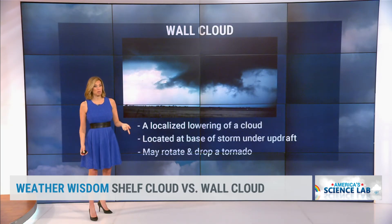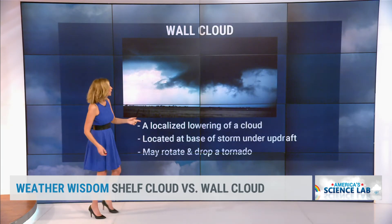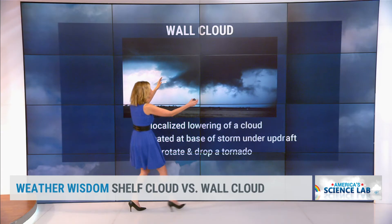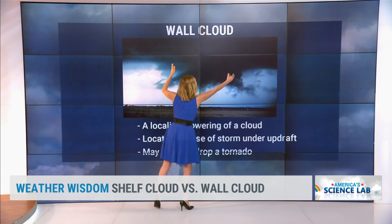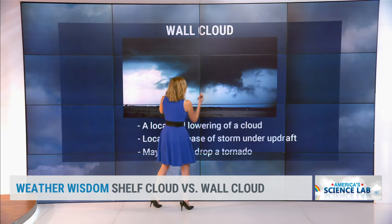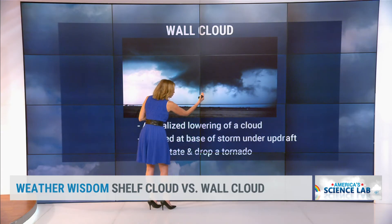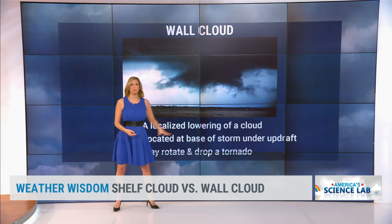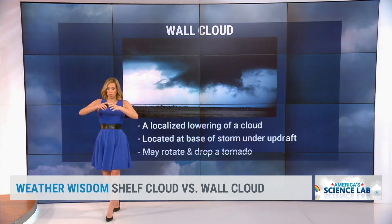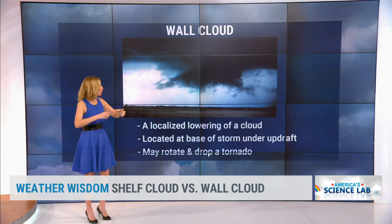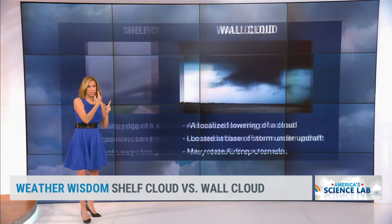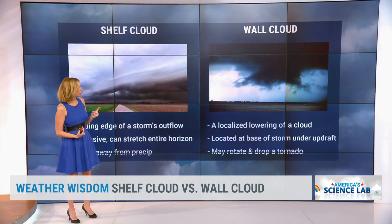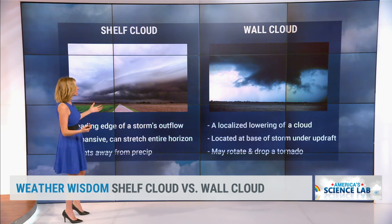A wall cloud is when you might have trouble. You can see it lowering down, and then you typically have that tornado dropping down from that wall cloud. So the wall cloud is surrounding the tornado. That's the difference.